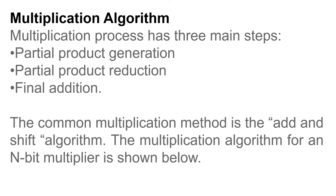The multiplication process has three main steps: first, partial product generation; second, partial product reduction; third, final addition. The common multiplication method is the add and shift algorithm. The multiplication algorithm for an n-bit multiplier is shown below.